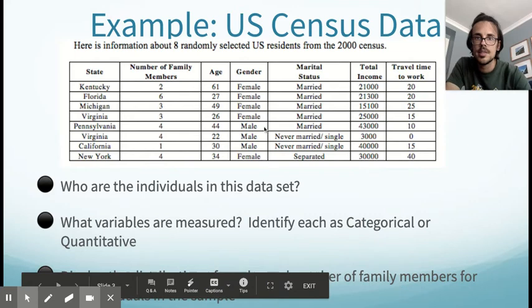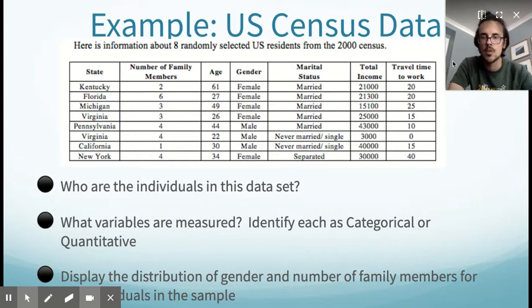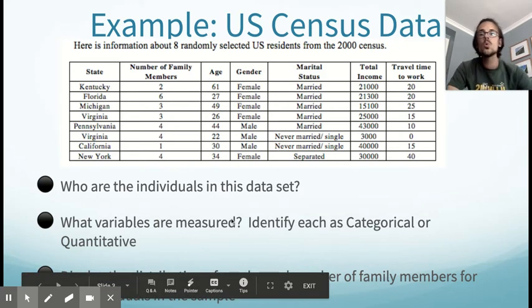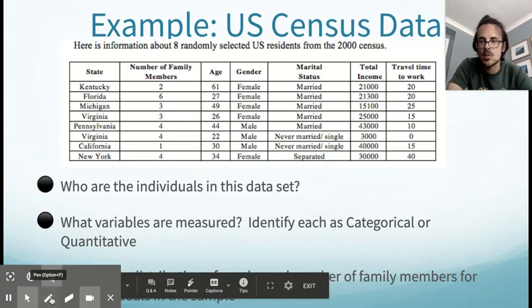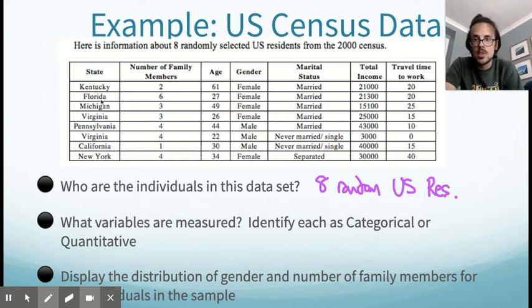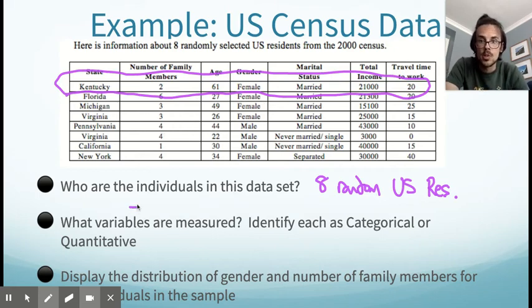Let's keep it moving on to the next slide here. And this slide has a table up top right here. It's info about eight randomly selected U.S. residents from the 2000 census. And there's a bunch of different variables and things that we're collecting data points about these eight people. So, who are the individuals in this data set? It's going to be eight randomly selected people. So, eight random U.S. residents. And each person is a row. So, if I look at this entire row right here, all of that corresponds to an individual. So, that's an individual. The next one's an individual, et cetera, et cetera. So, each row is a person. Each row is an individual.